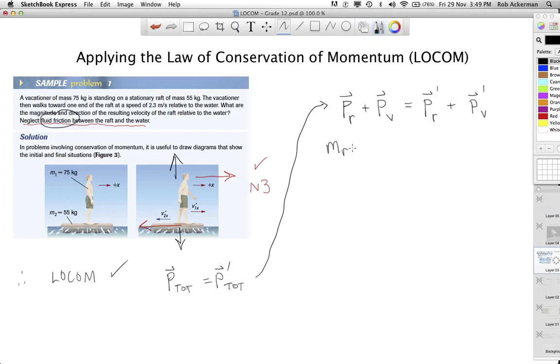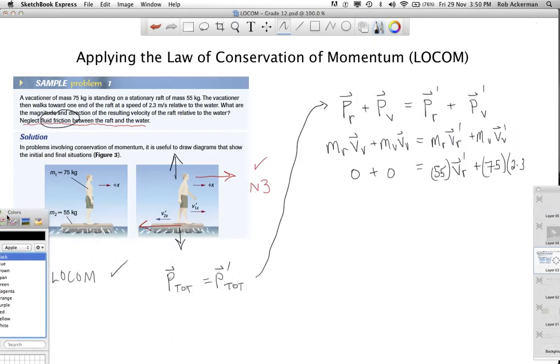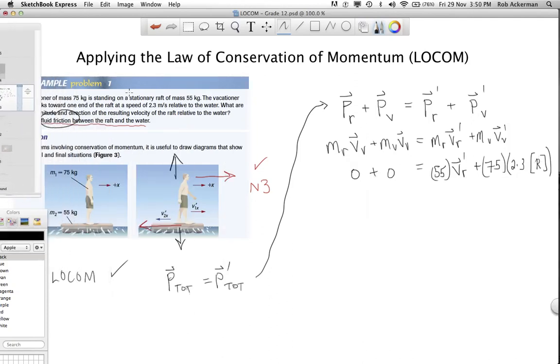M raft V raft prime plus M vacationer V vacationer prime is a little bit different. What numbers have we got here? The raft has a mass of 55 kg. I'm going to leave out units just to speed things up here. And we don't know what velocity it goes with after this interaction. The vacationer at 75 kg is moving to the right at 2.3. Now, I am going to include the letter, let me just move this over here. I'm going to include the letter R for right, because as vectors, maybe I can afford to leave out the units, but I cannot afford to leave out the direction. Leaving out direction with vectors is a recipe for disaster.